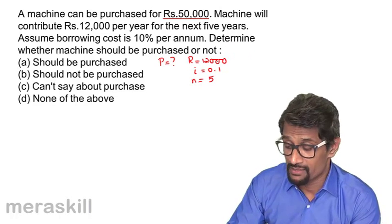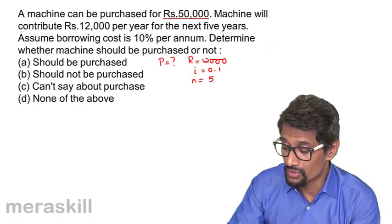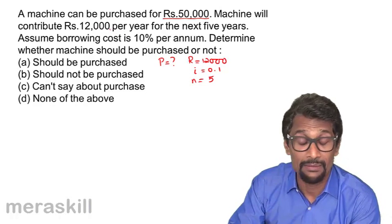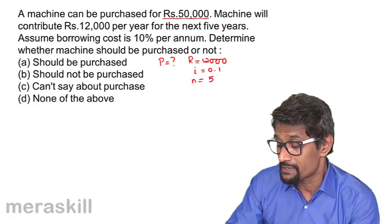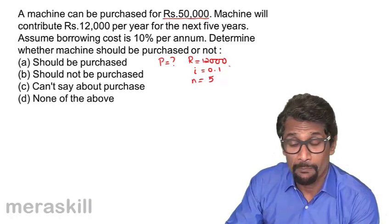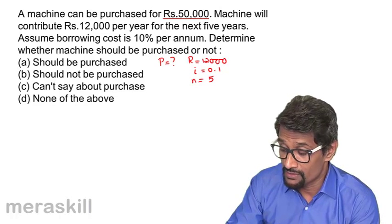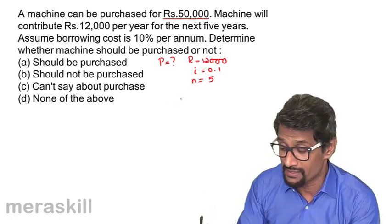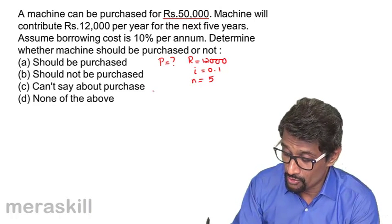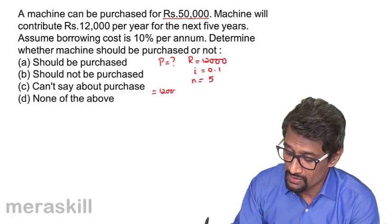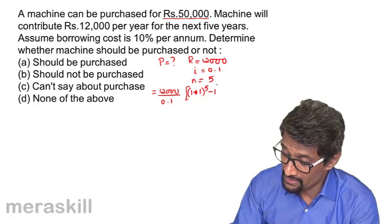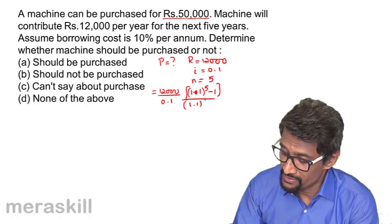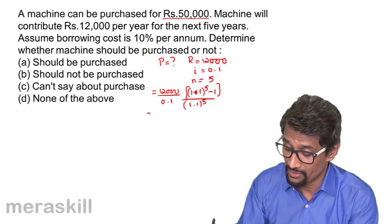The 60,000 that you're going to get through this machine — because it pays 12,000 per year for five years — its total value is 60,000. Let us see what the value of those 60,000 is in terms of present value. P is equal to r upon i, that is 12,000 upon 0.1, multiplied by (1.1 raised to 5 minus 1) divided by (1.1 raised to 5). Let's calculate this value.